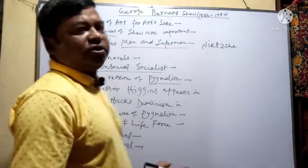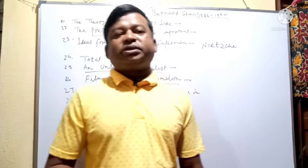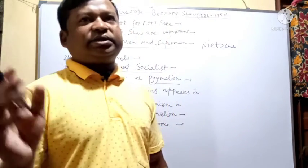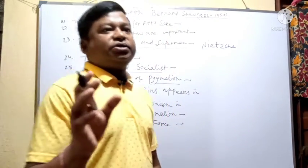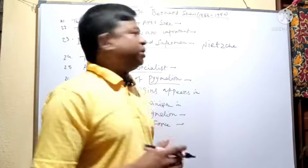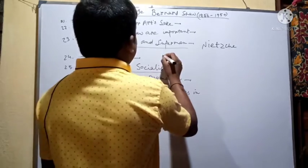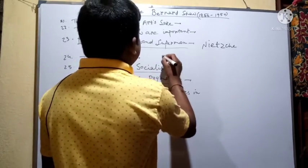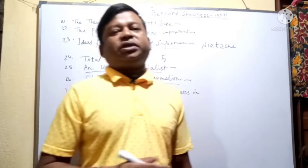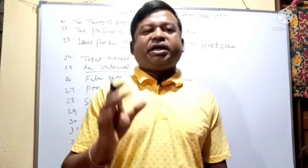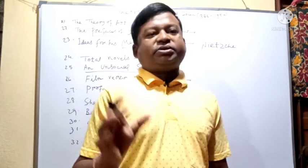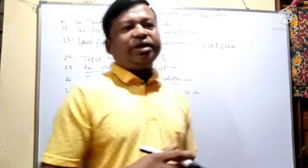How many novels did Shaw write? Shaw wrote a total of five novels. What is 'An Unsocial Socialist'? An Unsocial Socialist is a novel by Shaw.